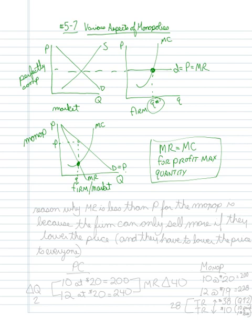Now, the question that you should have here at this point is, why is the marginal revenue different? And the reason why the marginal revenue is less than price for the monopoly is because the firm can only sell more if they lower the price. And in parentheses, I'll add here, and they have to lower the price to everyone.